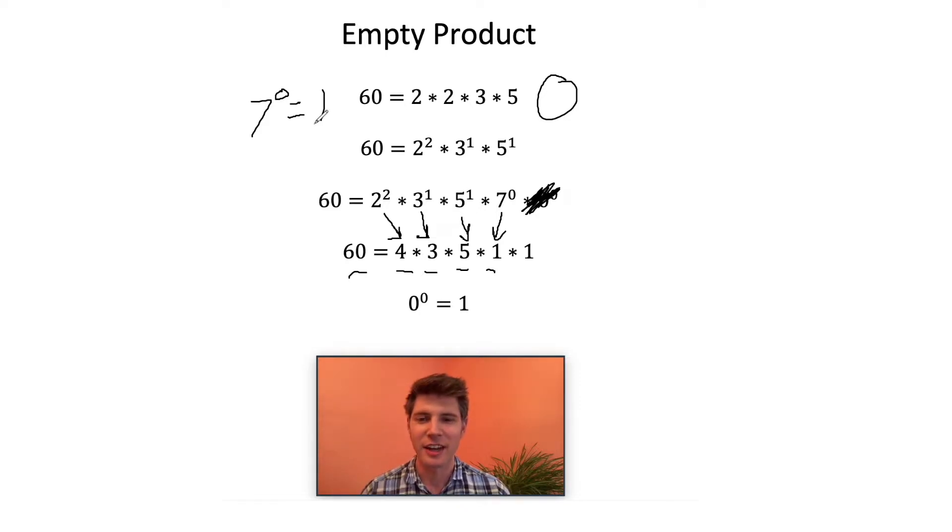I don't think there's any controversy that seven to the zero equals one. Where the controversy got introduced was when I said zero to zero equals one. But it's the same idea. How many zeros are up here? There are zero zeros. That would also be one. There's nothing to change it.